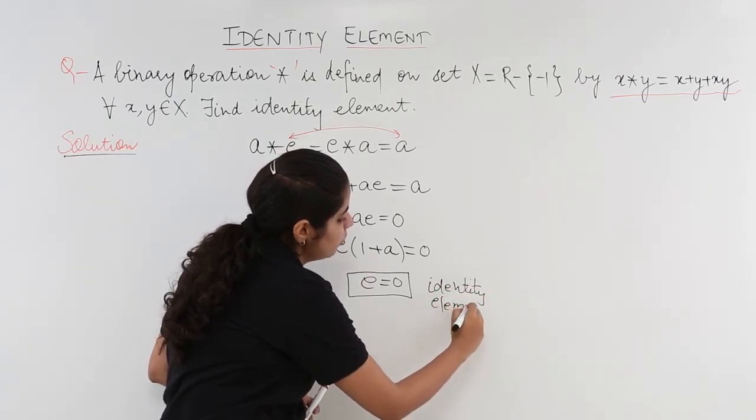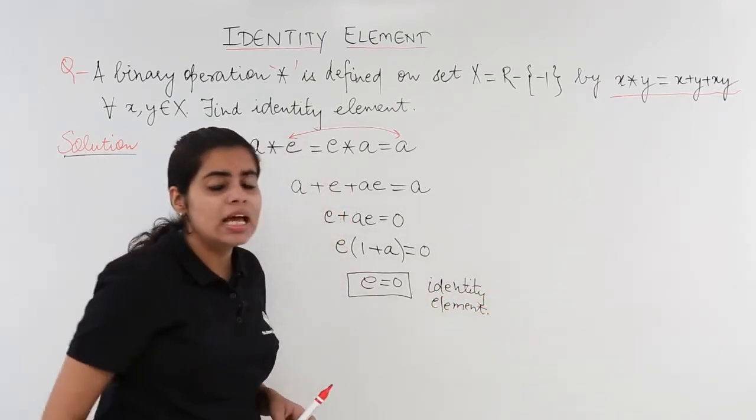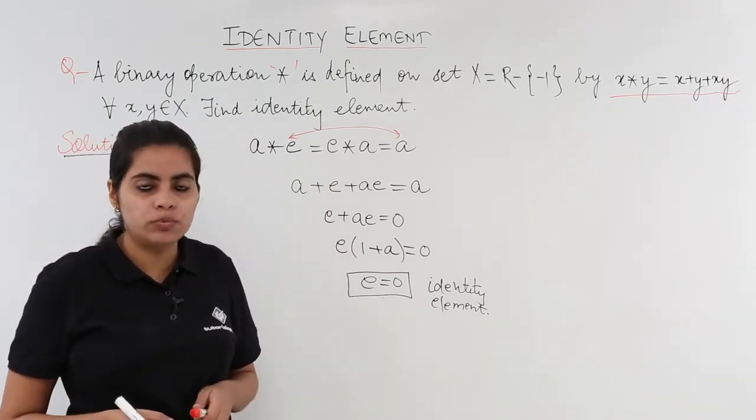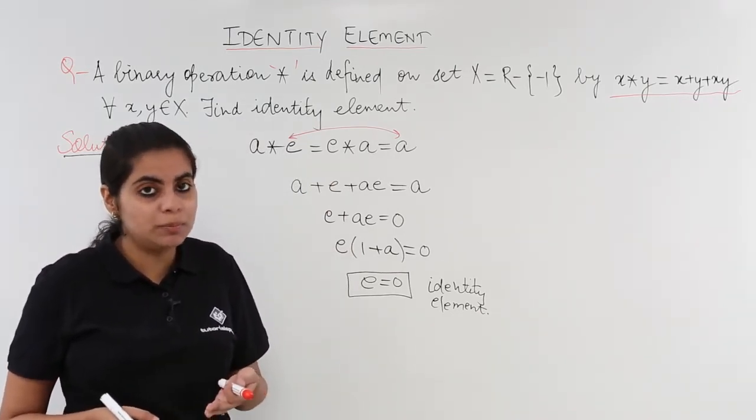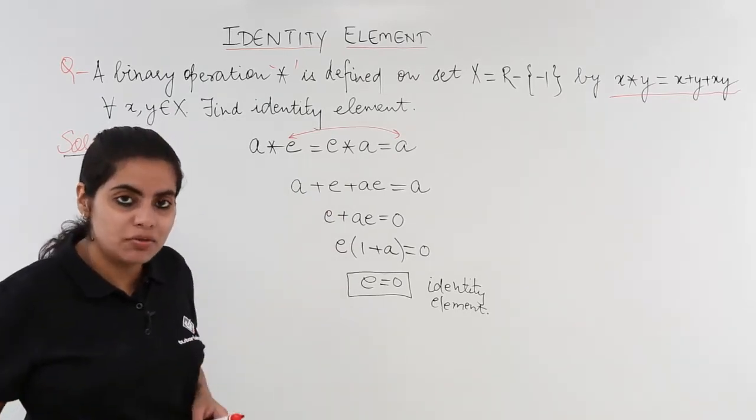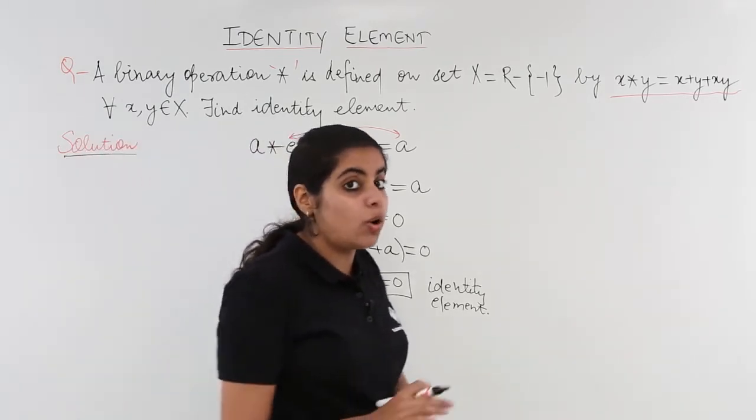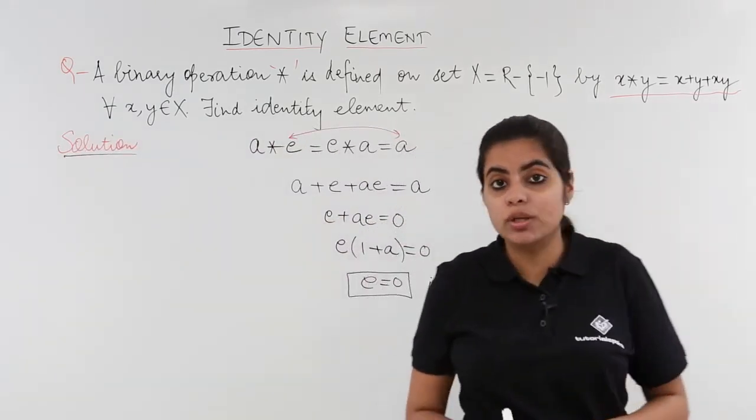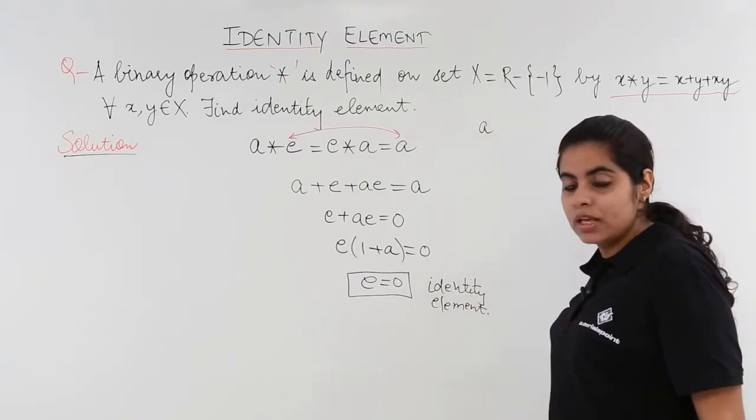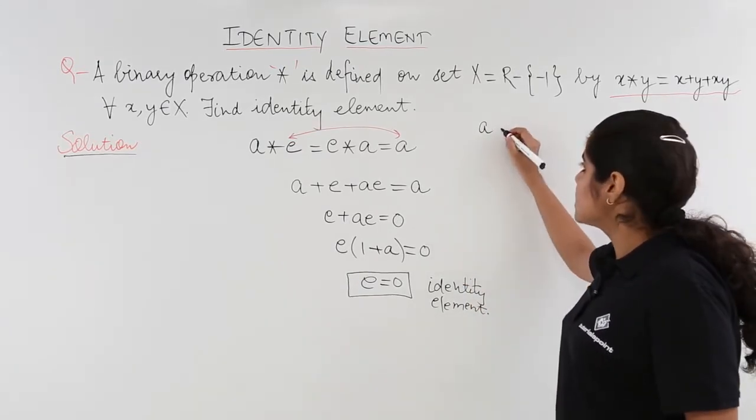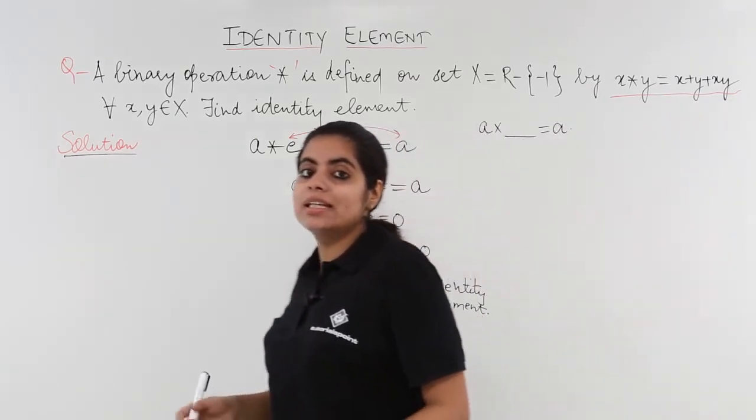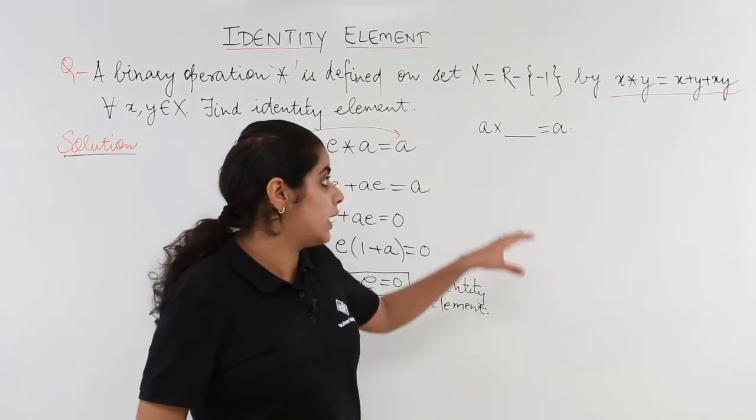Now some of you might have this thing in mind that is always the identity element equal to 0. Because in the previous numerical problem we took, the answer was 0. Here also the answer is 0. So my dear friends, let me remind you that always the identity element is not 0. For example, if I have a and I am asked to find the identity element when we take the case of multiplication for a.